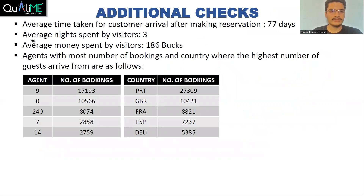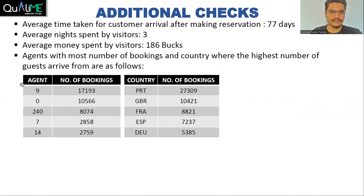Some additional checks on the dataset: the average time taken for customers' arrival after making a reservation is 77 days, meaning people book approximately two and a half months in advance. The average nights spent by visitors is three nights. Average money spent by visitors is 186 dollars. The top five agents had the highest number of bookings. The top five countries where most visitors come from are Portugal, Great Britain, France, Spain, and Germany.